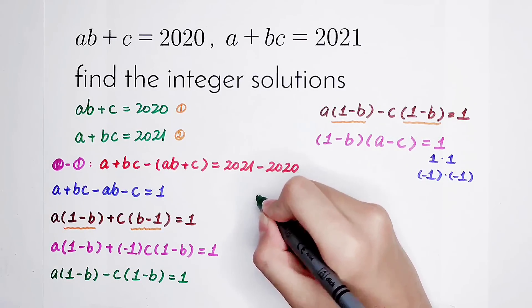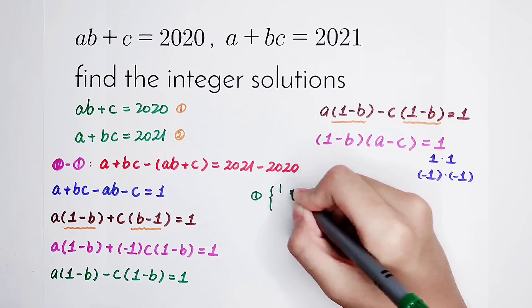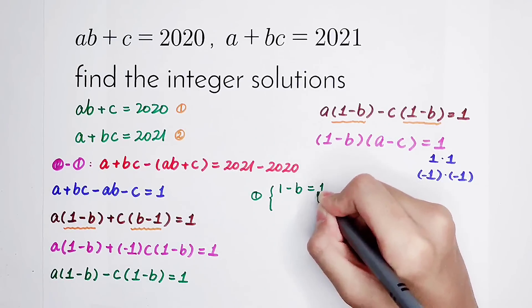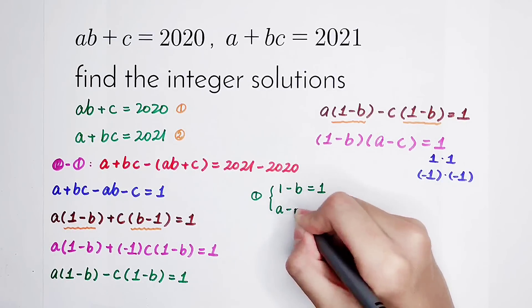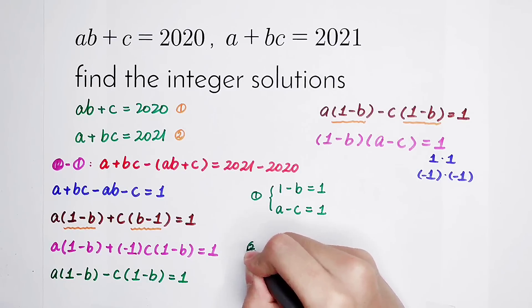The first case. That is, 1 minus B is 1. A minus C is 1. And my second case.